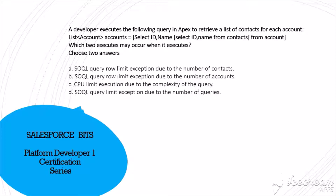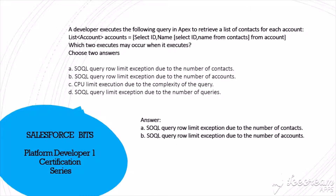A developer executes the following query in Apex to retrieve a list of contacts for each account. That is: select from accounts, running two queries — one for contacts and one for accounts. Which two exceptions may occur? The SOQL query limit exception due to number of contacts — yes. The limit exception due to number of accounts — yes. CPU limit — no. The correct answer is A and B, because with no limit specified, if there are more than 50,000 records, per governor limits it will throw a limit exception for both contacts and accounts.